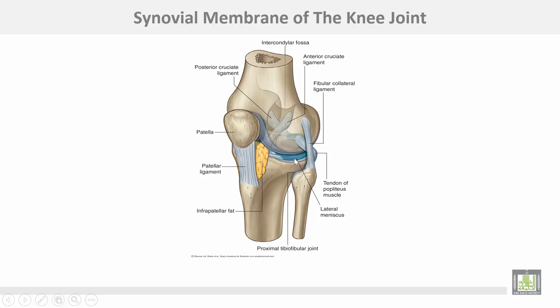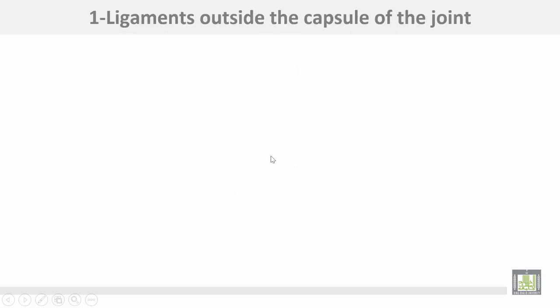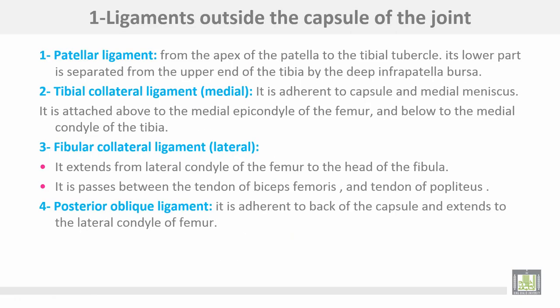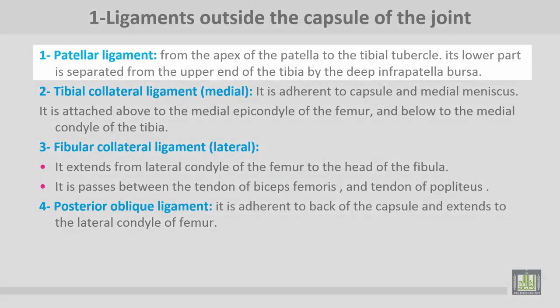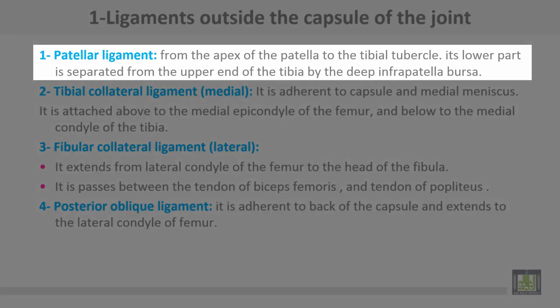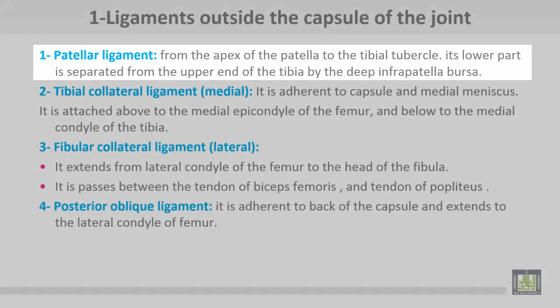This is the lateral meniscus. The ligaments outside the capsule of the joint: the patellar ligament extends from the apex of the patella to the tibial tubercle. The lower part is separated from the upper end of the tibia by the deep infrapatellar bursa.